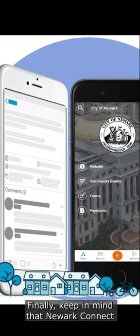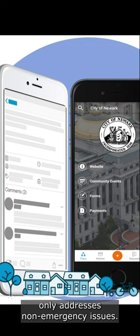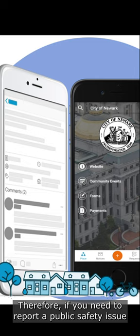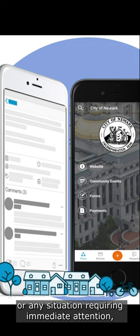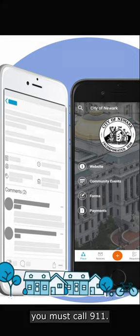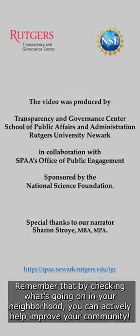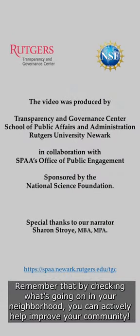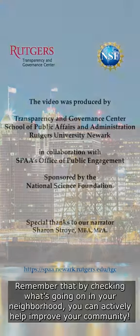Finally, keep in mind that Newark Connect only addresses non-emergency issues. Therefore, if you need to report a public safety issue or any situation requiring immediate attention, you must call 911. Remember that by checking what's going on in your neighborhood, you can actively help improve your community.